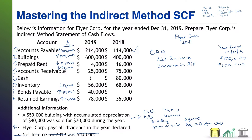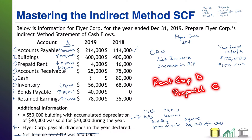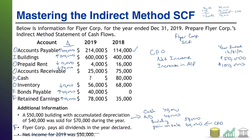Prepaid rent went down by $12,000. When a prepaid goes down, you used it up and incurred that cost. The journal entry - debit rent expense, credit prepaid rent - reduces net income but there is no cash outflow. Same situation as the increase in accounts payable: a reduction in net income with no cash outflow. So we add it back: decrease in prepaid rent, add $12,000.